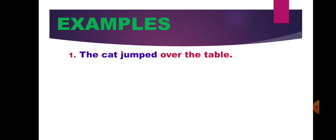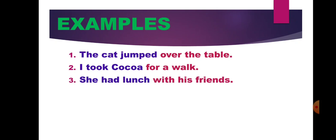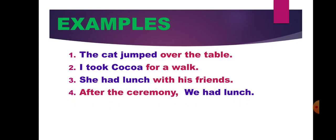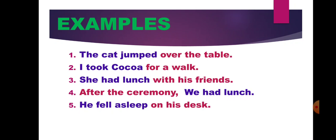Examples: The cat jumped over the table. I took Cocoa for a walk. She had lunch with his friends. After the ceremony we had lunch. He fell asleep on his desk. In the given sentences, the groups of words — over the table, for a walk, with his friends, after the ceremony, on his desk — do not have a subject and a predicate, and they do not make complete sense by themselves, but they form parts of sentences. So such groups of words are called phrases.